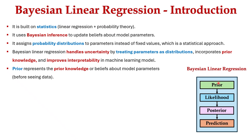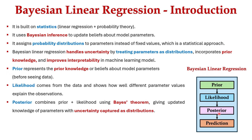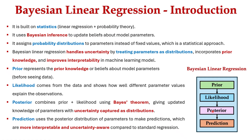In Bayesian linear regression, the prior represents prior knowledge or belief about model parameters. Likelihood comes from the data and shows how well different parameter values explain the observations. The posterior combines prior and likelihood using Bayes' theorem, giving the updated knowledge of parameters with uncertainty captured as a distribution. In prediction, it uses the posterior distribution of parameters to make predictions which are more interpretable and uncertainty-aware compared to standard regression.